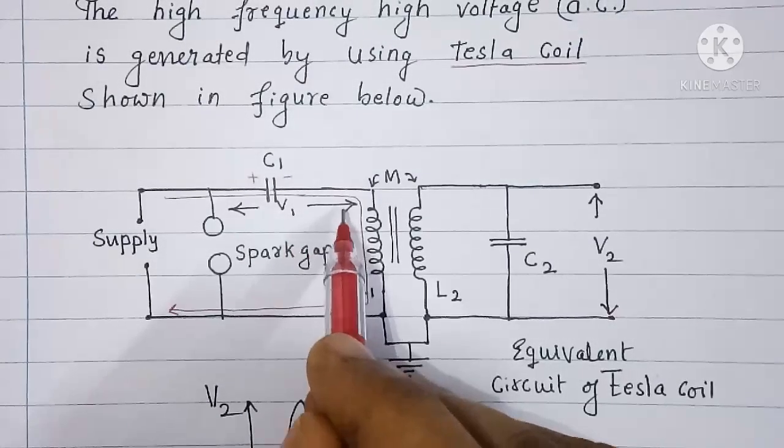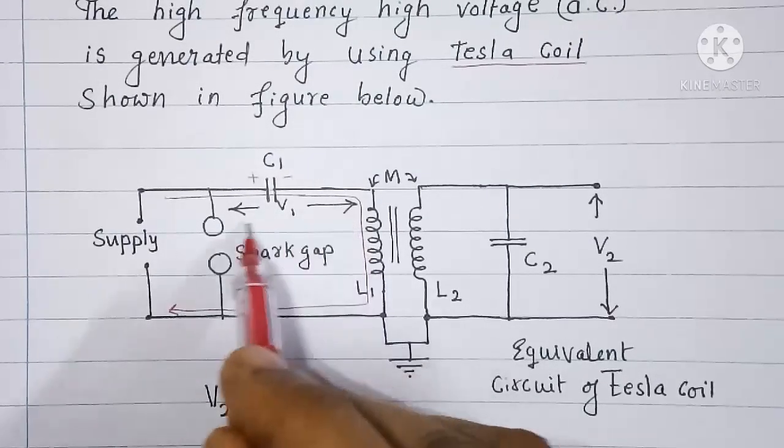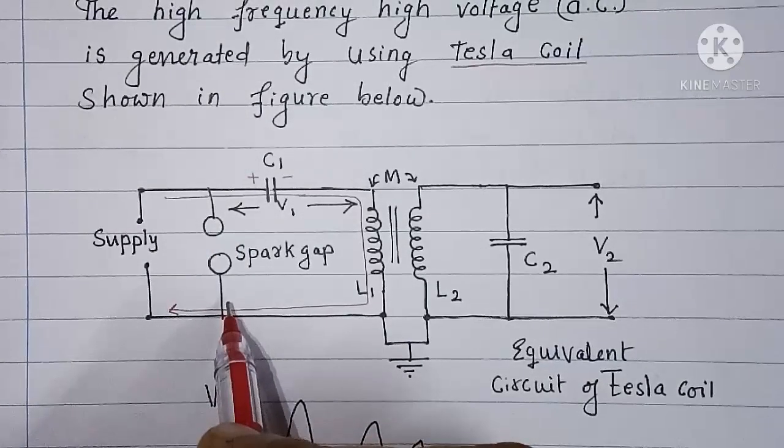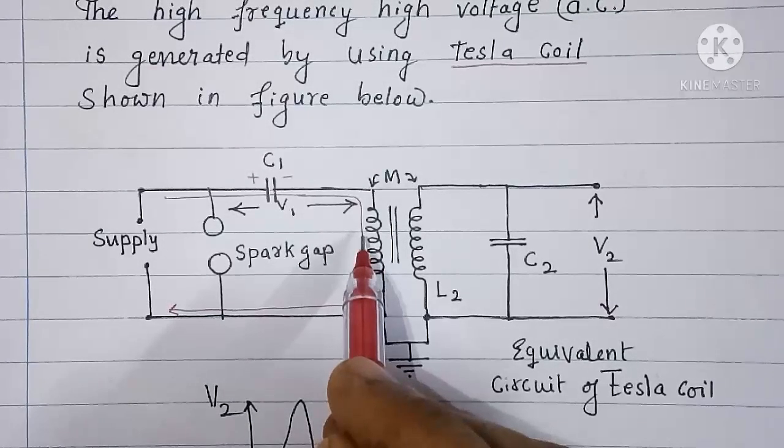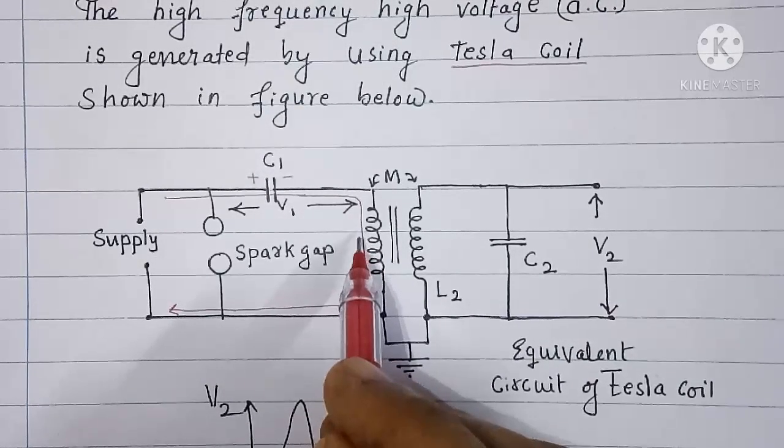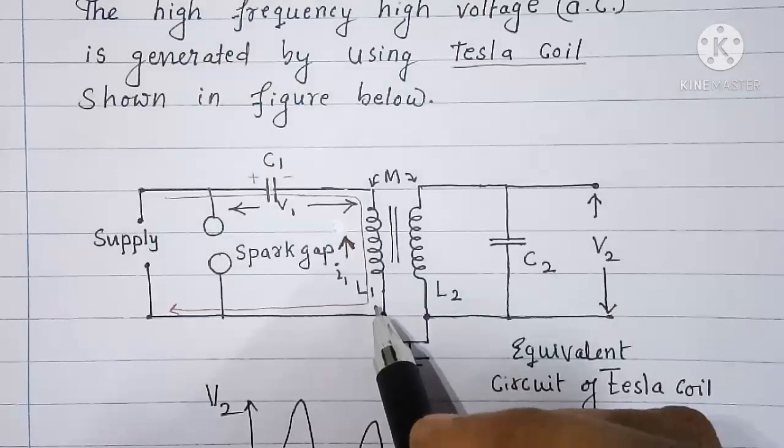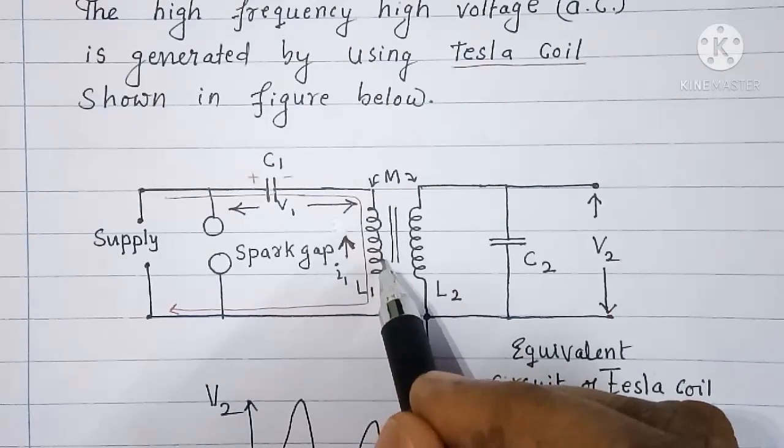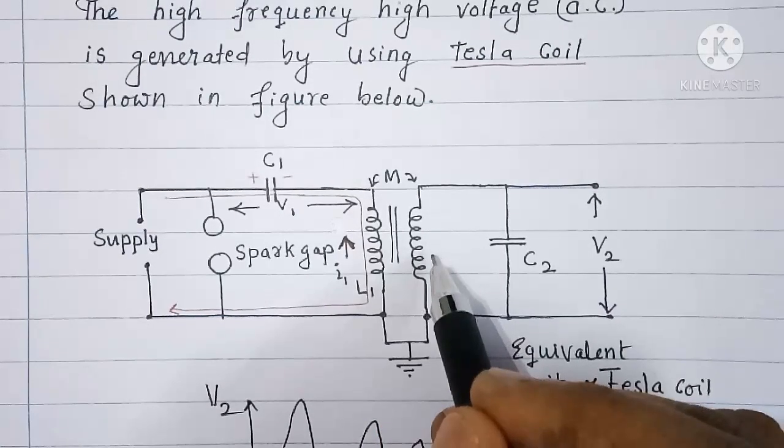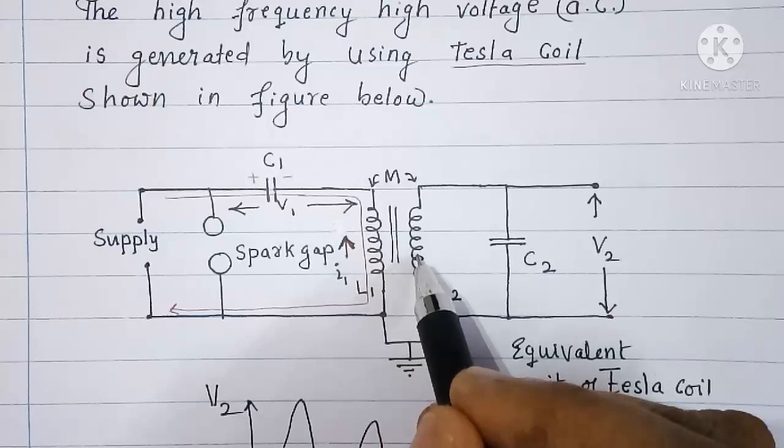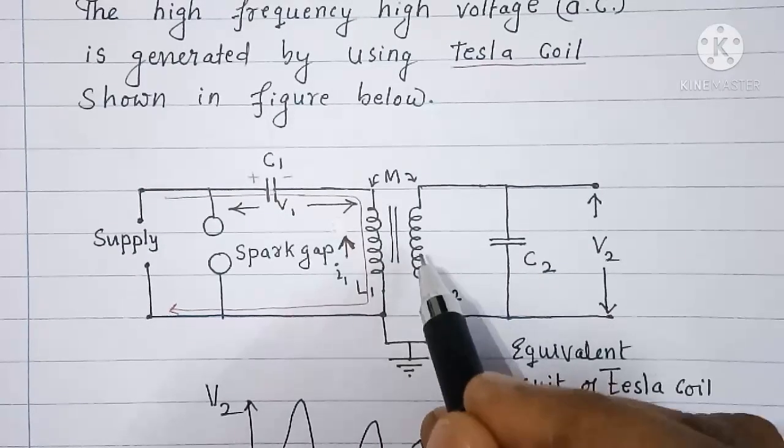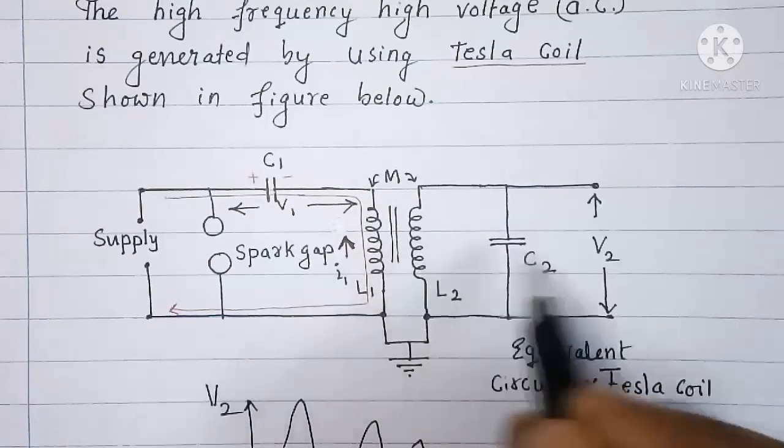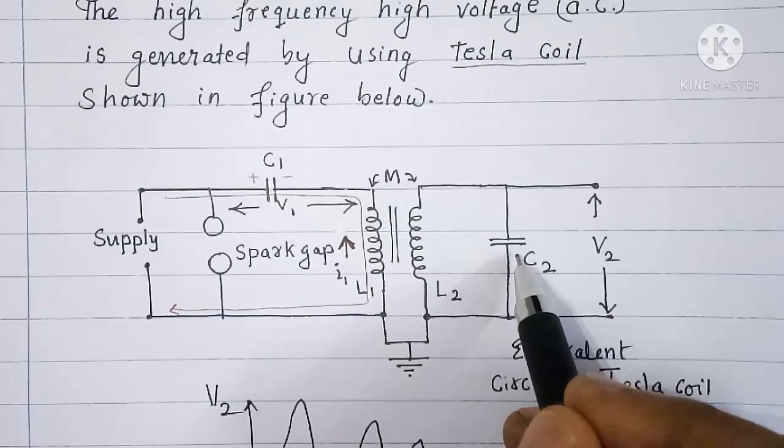Now the capacitor will start to discharge through the ionized medium between the spheres and through the primary of high voltage high frequency transformer. Let us say current I1 is discharging current. When this current I1 flows through the primary of high voltage high frequency transformer, then EMF gets induced in the secondary of the transformer because there is mutual induction between the two windings. Now the induced voltage which is V2 will appear across the load capacitor C2.